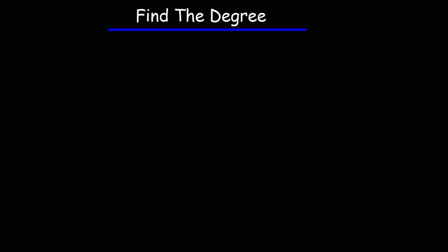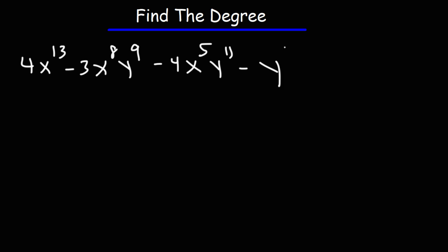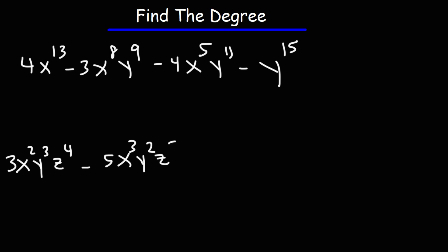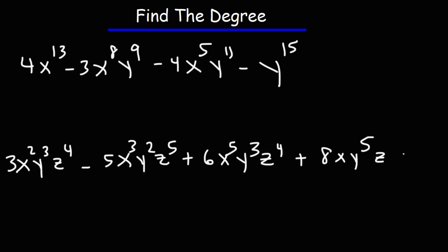Now let's try some examples that are slightly harder. Try this: 4x to the 13th minus 3x to the 8th y to the 9th, minus 4x to the 5th y to the 11th, minus y to the 15th. And try this one as well: 3x squared y cubed z to the 4th, minus 5x cubed y squared z to the 5th. Let's find the degree of each monomial and then identify the degree for the polynomial.